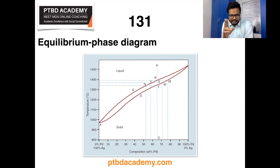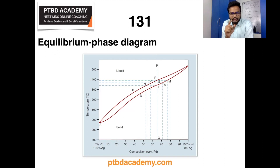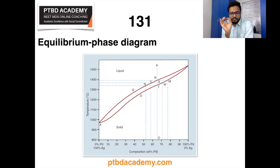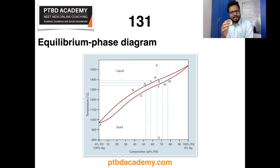At 1500 degrees centigrade, if you observe the dotted line perpendicular to the x-axis at a concentration of 65 percent palladium and 35 percent silver, the system is in the liquid state. That's how you can interpret this diagram.